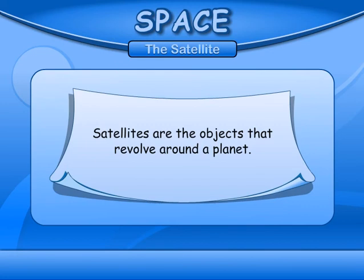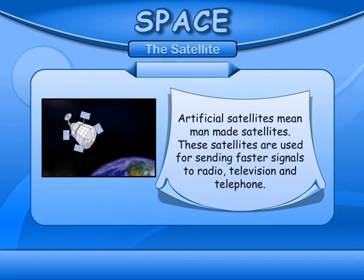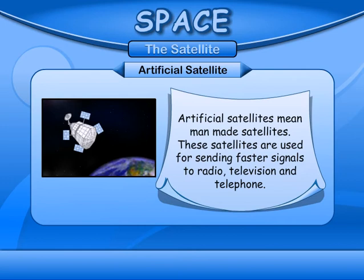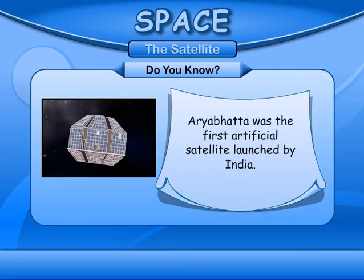The Satellite. Satellites are objects that revolve around a planet. Natural satellites refer to satellites which are natural; the Moon is the natural satellite of the Earth. Artificial satellites are man-made satellites used for sending faster signals to radio, television and telephone. Weather satellites take pictures of clouds' movements and help in forecasting the weather. Aryabhata was the first artificial satellite launched by India.